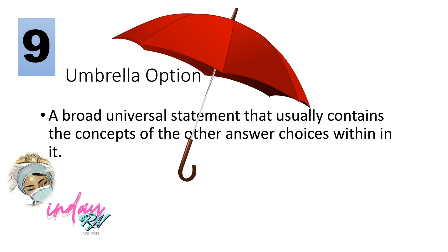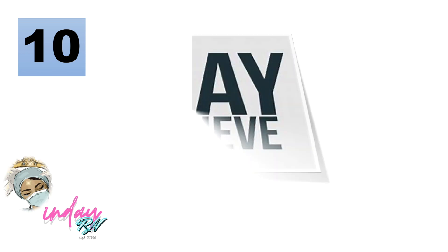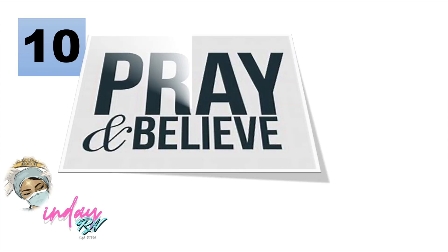The ninth strategy is to consider the umbrella option — a broad, universal statement that contains the concepts of the other answer choices within it. If option D also encompasses what is said in options A, B, or C, consider it the umbrella option, and that is typically the best choice.